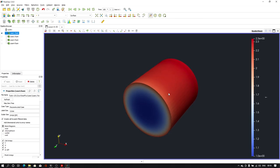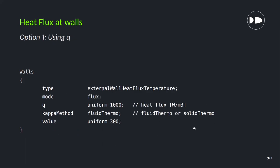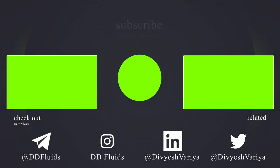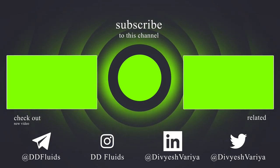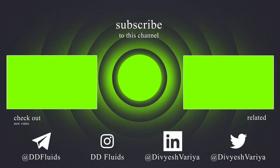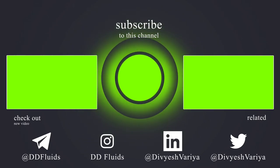That was all for this video. Whichever way you want to implement a heat flux boundary condition, you can — it completely depends on what input you have: heat flux, power, heat transfer coefficient, or flux and thermal conductivity. If you are looking for this presentation or any other learning material regarding OpenFOAM, you can join my Telegram channel where all PDFs will be available. You can also subscribe to this YouTube channel. Stay healthy, stay fit, see you in the next video.